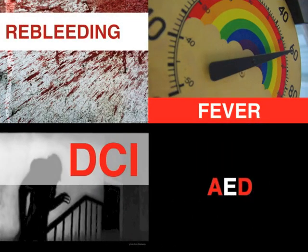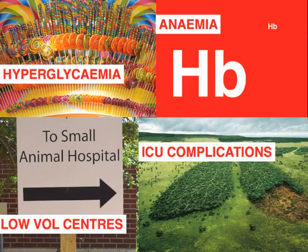There are some variables that affect outcome that we may be able to influence, including re-bleeding — so secure the aneurysm as soon as possible — fever — so aggressively aim for normothermia — use of anticonvulsants — so try to stop phenytoin at day 3 if there's no evidence of seizures — delayed cerebral ischaemia from vasospasm — so have high vigilance for this and avoid dehydration, and treat as discussed in the previous PK. Hyperglycaemia and anaemia are independently predictors of poor prognostic outcomes. Complications such as pneumonia and sepsis do happen, but there are ways to make them less likely. Treat in high-volume centres with availability of neurosurgical and endovascular services.